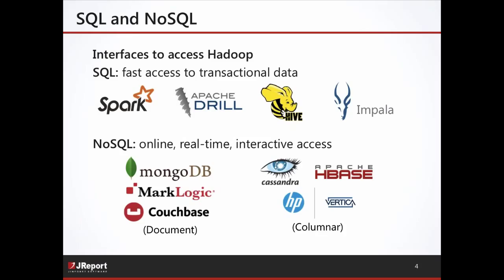Apache Hive is another open source project that's been around for a while — they're on version 1.2 — and it's a great way to access SQL through a schema-based approach. Impala is another alternative developed by Cloudera. There's a lot of choice in being able to access Hadoop and issue SQL statements against Hadoop data.